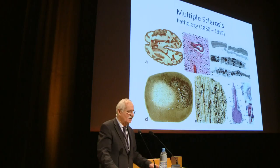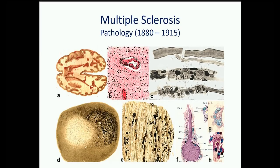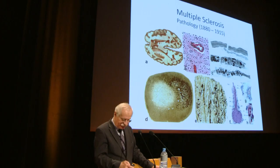Lassmann will focus on two aspects: inflammation and the mechanisms of tissue damage and neurodegeneration. Although genetics studies have been beautifully presented, the fact that MS is an inflammatory disease has been known for more than 150 years, with examples from Charcot and Babinski demonstrating this clearly.